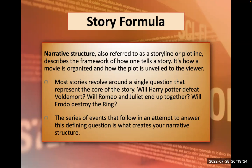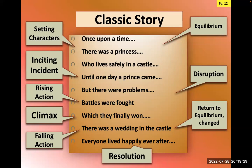Here's a classic story: 'Once upon a time there was a princess.' We've got setting and characters — this is the state of equilibrium, the character is just normal. Then there's an inciting incident: 'Until one day a prince came, but there are problems' — this creates disruption. We see rising action with battles fought, which they eventually won — this is our climax. Then there was a wedding and everyone lived happily ever after — the falling action, resolution, and return to equilibrium.